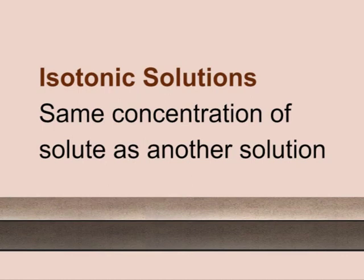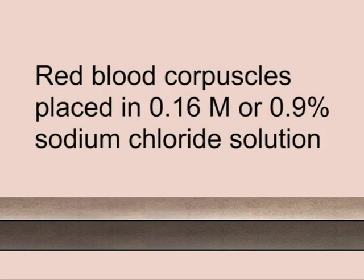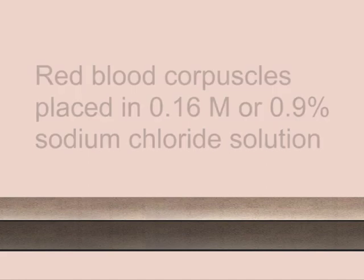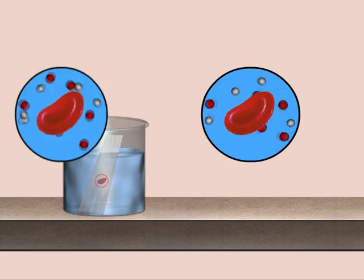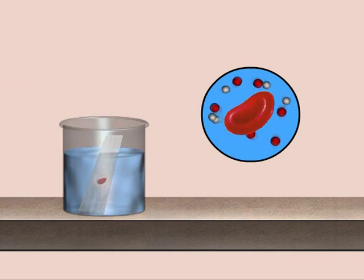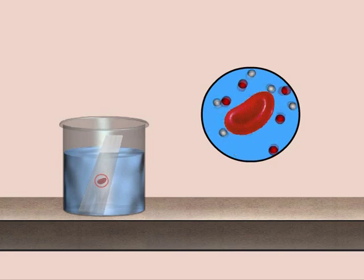Isotonic solutions contain the same concentration of solute as another solution. Its example is red blood corpuscles placed in 0.16 molar sodium chloride solution. In this case, blood cells neither swell nor shrink as no osmosis takes place. When a cell is placed in an isotonic solution, water diffuses into and out of the cell at the same rate. The fluid that surrounds the body cells is isotonic.